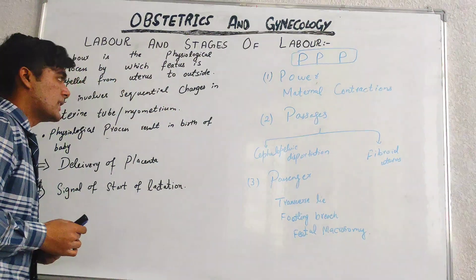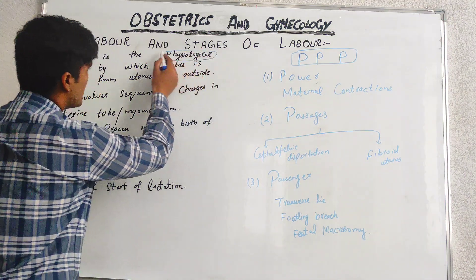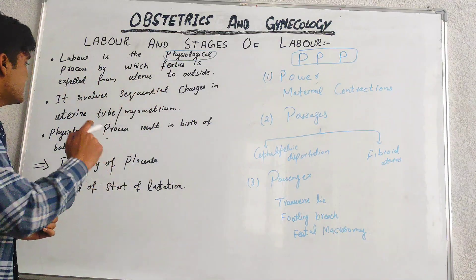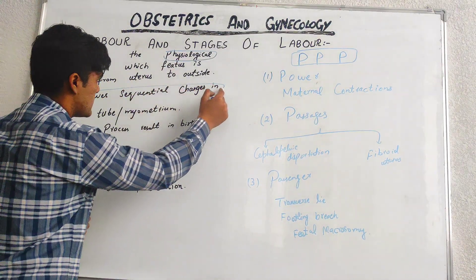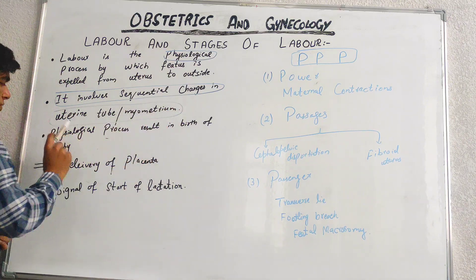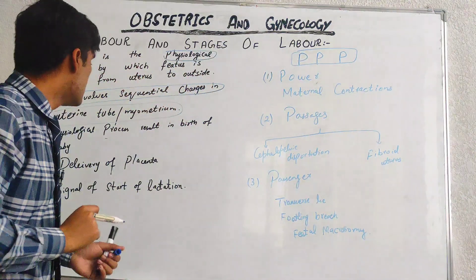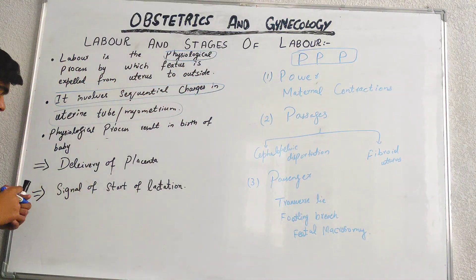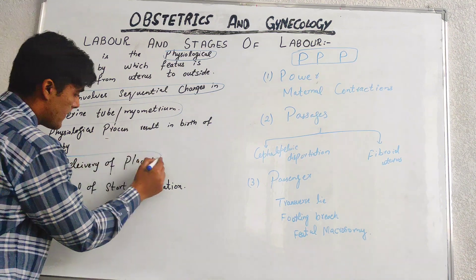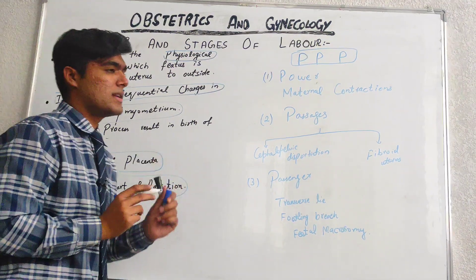Let us first talk about what actually labour is. Labour is basically a physiological process by which the fetus is expelled from the uterus to outside. It is basically sequential changes that occur in the uterine cervix and myometrium. These sequential changes collectively we say is labour. It is a physiological process that involves birth, delivery of placenta, and signals to start lactation.